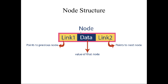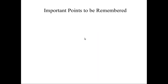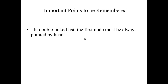In a doubly linked list, the node structure has three fields: link1, data, and link2. Link1 represents the address of the previous node, data is the actual data, and link2 points to the address of the next node. These three fields provide the connection between the previous node, the actual data, and the next node.